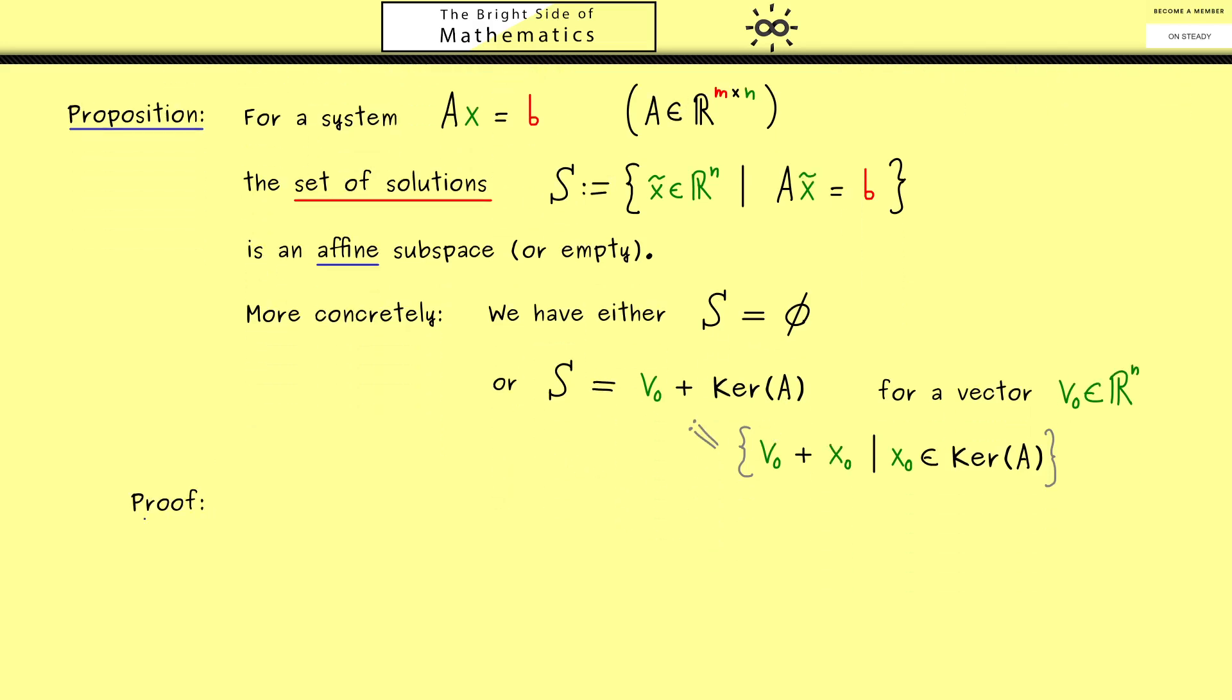Now I want to write down the proof of this proposition. Now in the case that the set of solutions S is not the empty set, we can assume that at least one vector v_0 exists. This means now in the case that at least one solution exists, we can show that S is of this form.